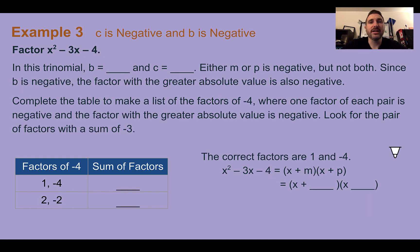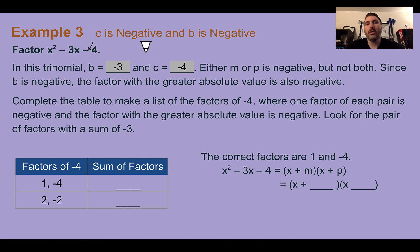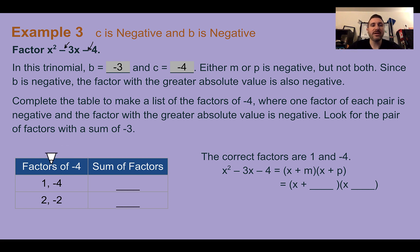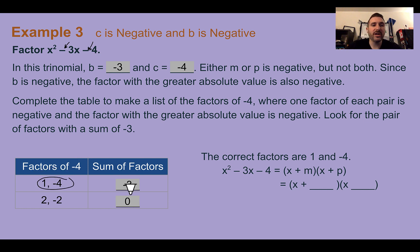Example 3, c is negative and b is negative. Here b equals negative 3 and c equals negative 4. Since c is negative, one factor is positive and one is negative. Since b is negative, the factor with the greater absolute value is negative. Factors of negative 4: 1 and negative 4 add to negative 3; 2 and negative 2 add to 0. So the correct factors are 1 and negative 4, giving x plus 1 times x minus 4.